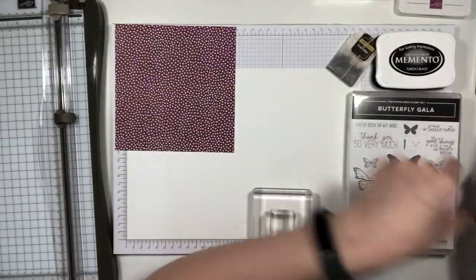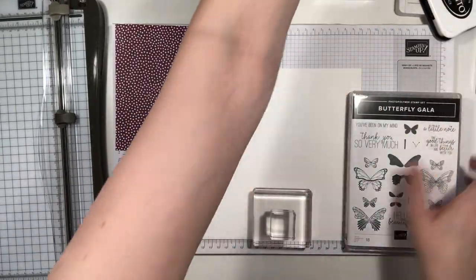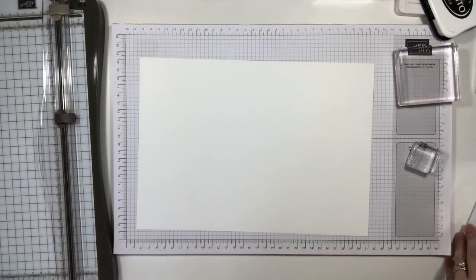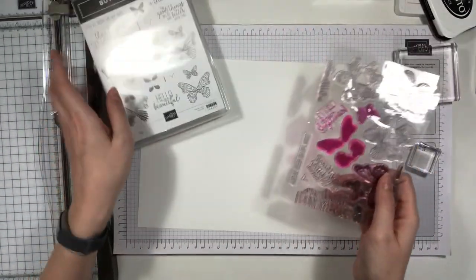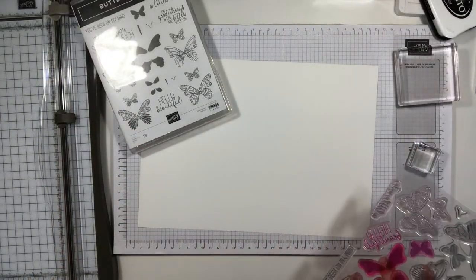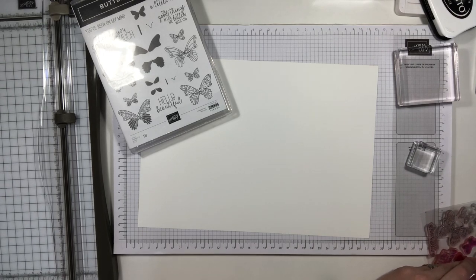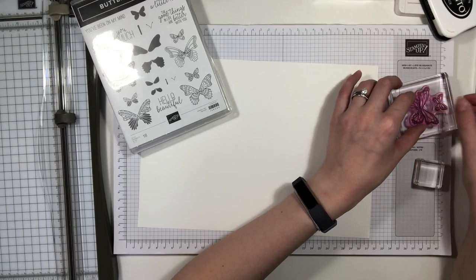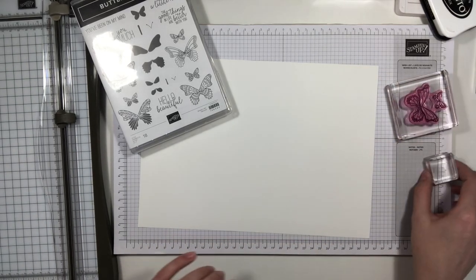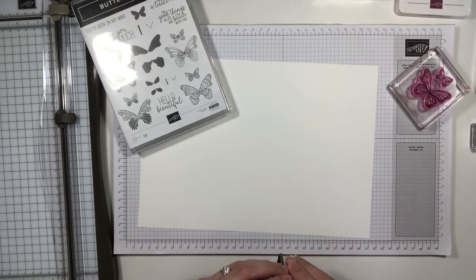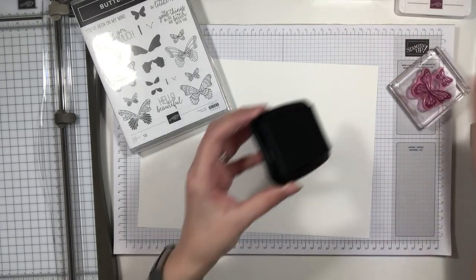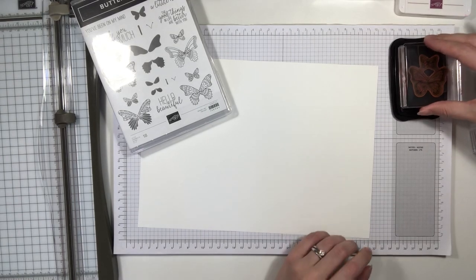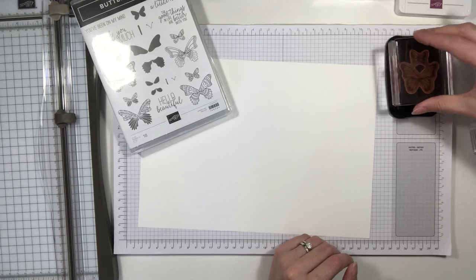So first things first, we're going to stamp out our butterflies. This is using the butterfly gala stamp set which is carried over into the new catalogue so you will be able to get it. You can obviously decorate these however you want. The main idea was for something to give as little gifts or swaps that just looks a bit special, but it's something basic.